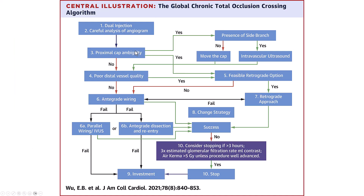Antegrade wiring or retrograde are the preferred approaches, as reflected in the global CTO crossing algorithm. If there is proximal cap ambiguity, this can be resolved in either the antegrade or the retrograde direction. In the retrograde direction we can use the septal collaterals, whereas in the antegrade direction, with the available side branch, we can use intravascular ultrasound or the so-called move-the-cap technique, in which we dissect proximal to the proximal cap.